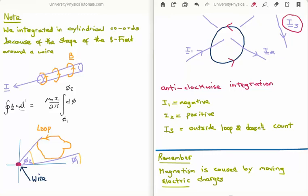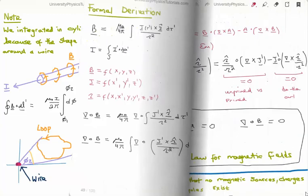Just to note again: magnetism is caused by moving electric charges. Stationary electric charges generate electric fields, however moving electric charges generate both electric and magnetic fields. Now I am going to move on to the formal derivation of Ampere's law, and we will also encounter Gauss's law for magnetism.